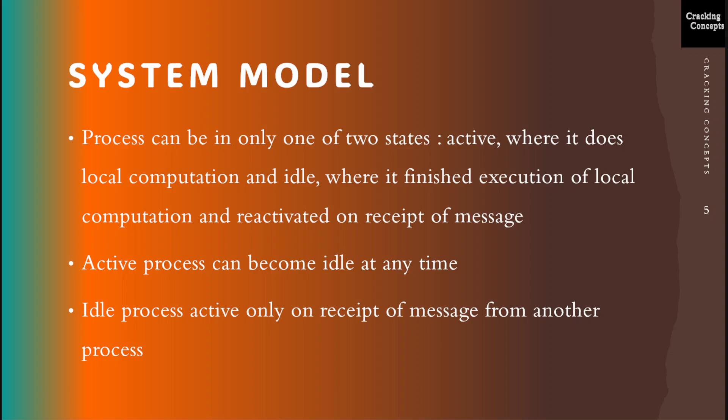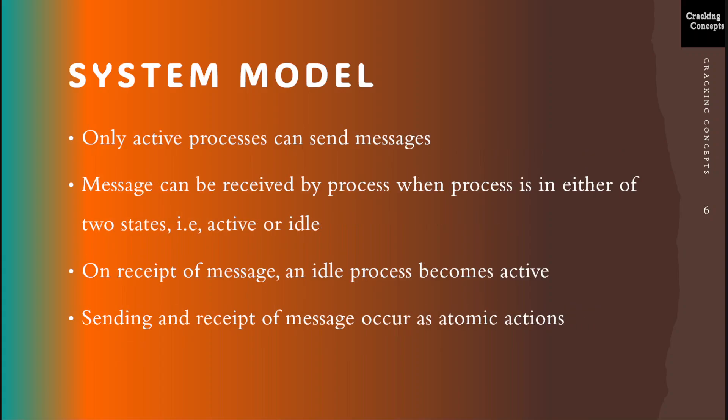Now discussing the system model. At any given time a process can be in only one of two states: either active, where it is doing local computation, or idle, where the process has temporarily finished the execution of its local computation and will be reactivated only on the receipt of a message from another process. An active process can become idle at any time, and only active processes can send messages. A message can be received by a process when it is in either of the two states, active or idle. On the receipt of a message, an idle process becomes active.